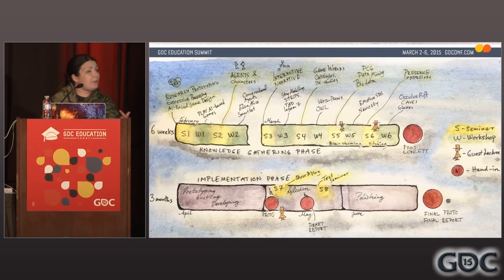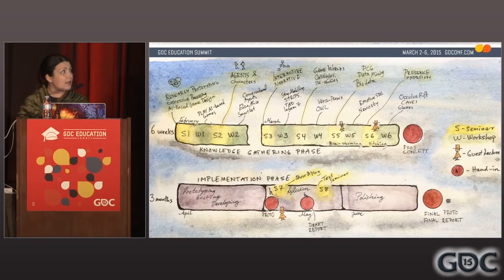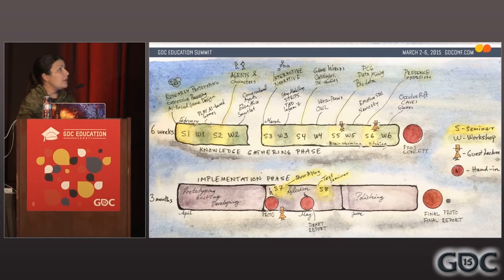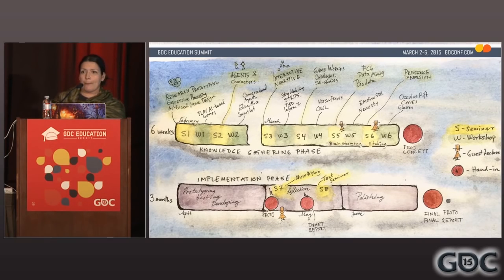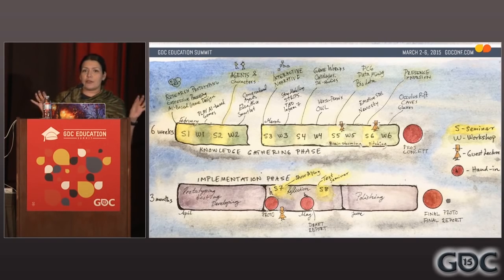Basically, AI-based game design was one of the starting points, and also looking at methods for research prototyping — how can you answer a research question by posing it as a prototype. Looking at agents and characters, interactive narrative systems, game worlds, how you build rich ontologies for a game. Looking at procedurally generated content methods, data mining, big data. And the toolbox and toy box using things like biodata and other types of inputs like the Kinect, mainly looking at the huge area of presence research and immersion. This was interspersed with hands-on workshops.